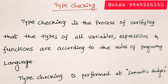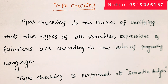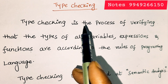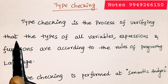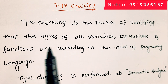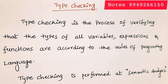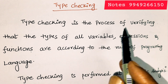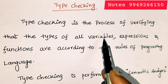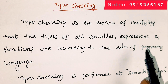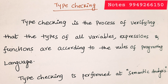Welcome to this video on type checking, an important topic in compiler design. Type checking is the process of verifying that the types of all variables, expressions, and functions are according to the rules of the programming language. This applies whether you use C, C++, Java, or any other programming language.